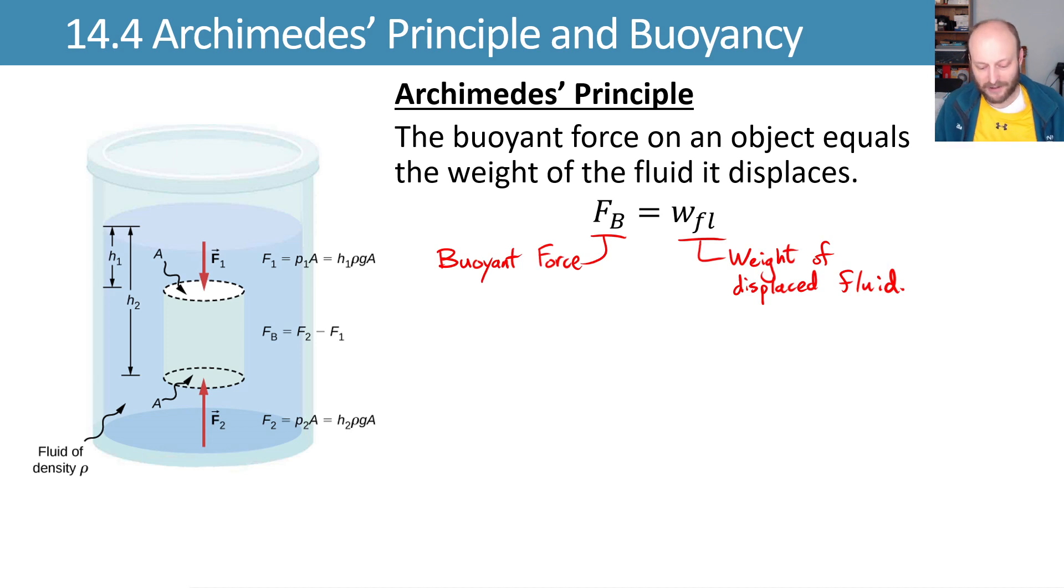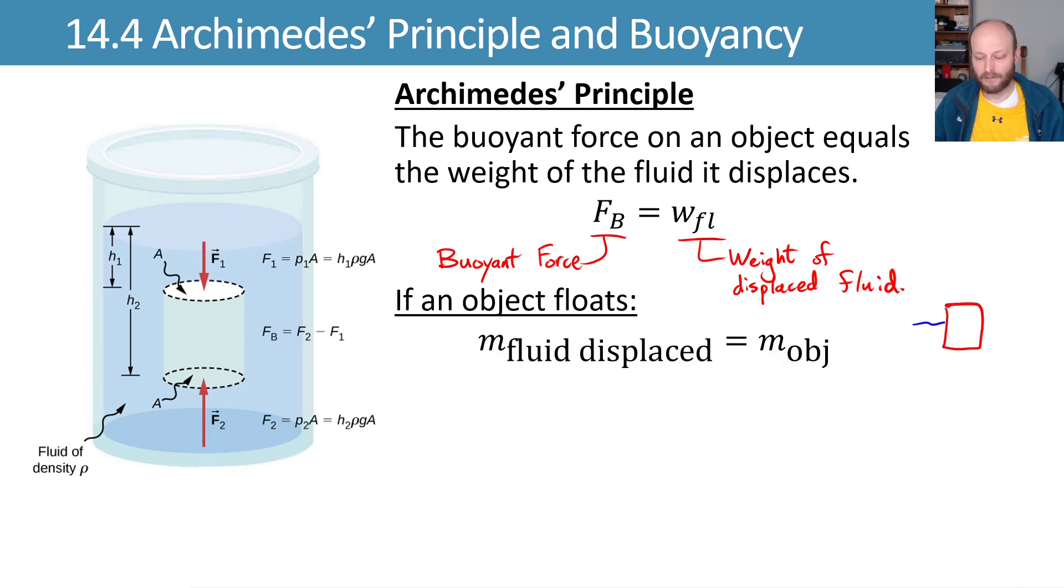What about a floating object? Well, a floating object is sitting there on the surface of the water. If you think about it, the weight of the object is pushing down, and the buoyant force has to be balancing that weight. So mass times gravity pushing down has to equal whatever the buoyant force is pushing up.